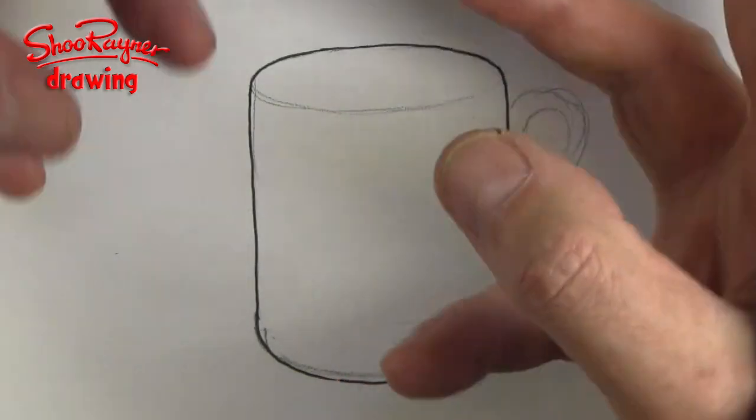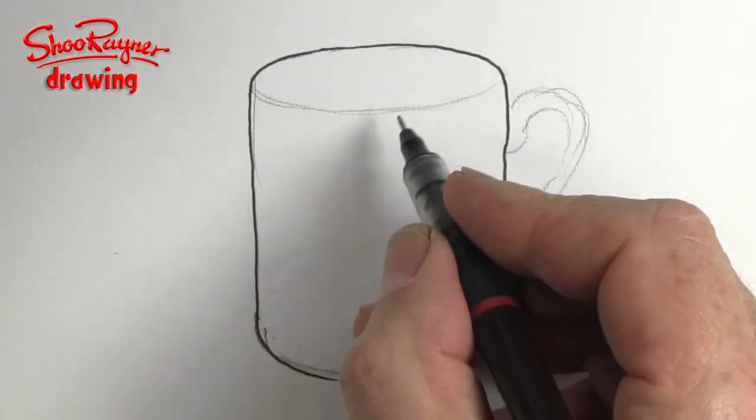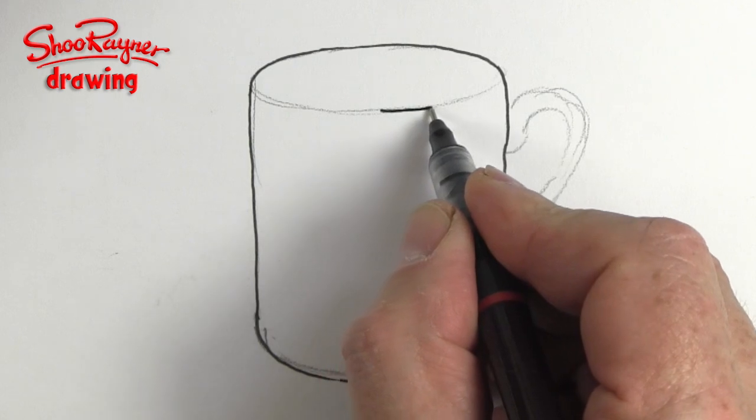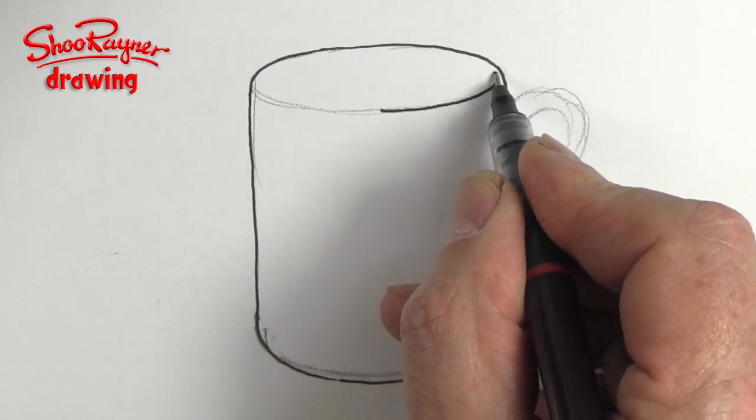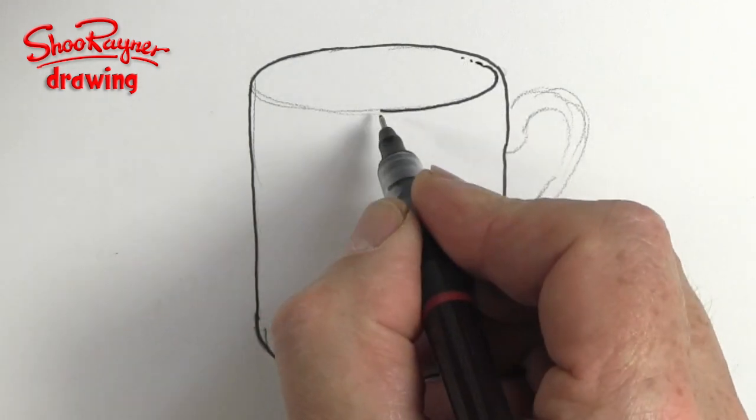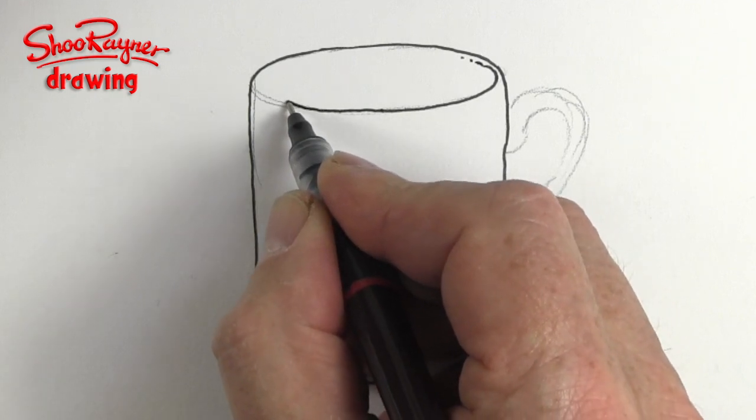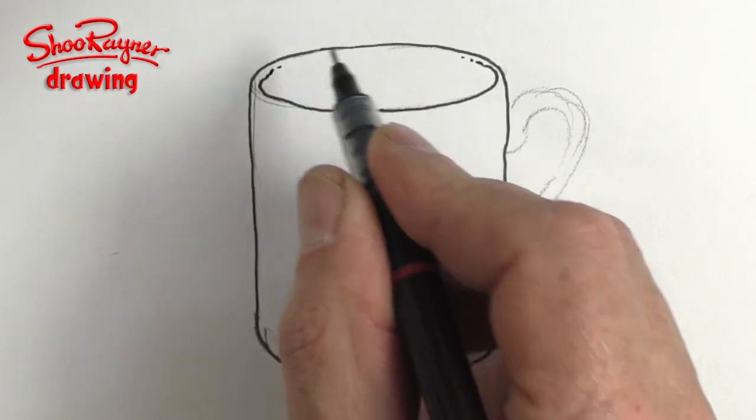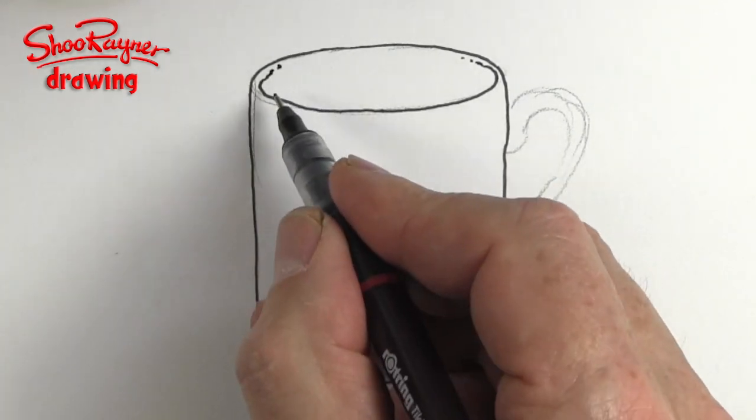The reason I'm doing that is because we need a kind of thickness of the mug. So I'm going to start here but I'm not going to go right to the edge. I'm going to go there and then that will just fade as you come in around there like that. So you're getting a bit of thickness to the mug.